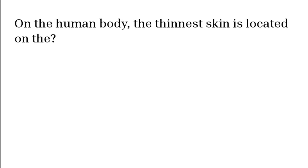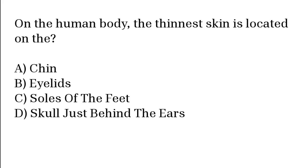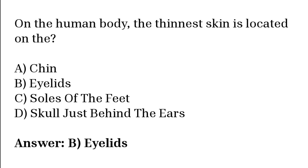On the human body, the thinnest skin is located on the: chin, eyelids, soles of the feet, skull just behind the ears. The correct answer is option B. On the human body, the thinnest skin is located on the eyelids.